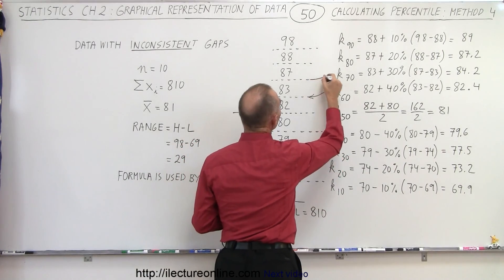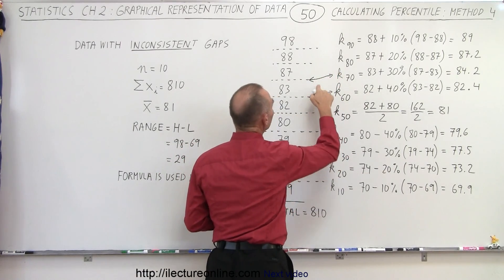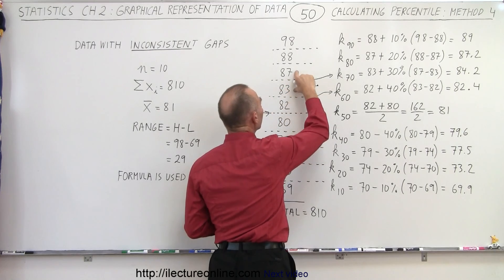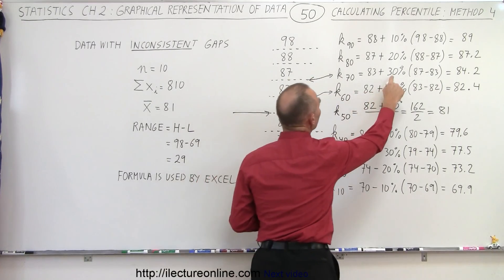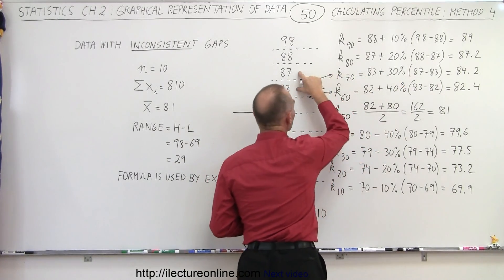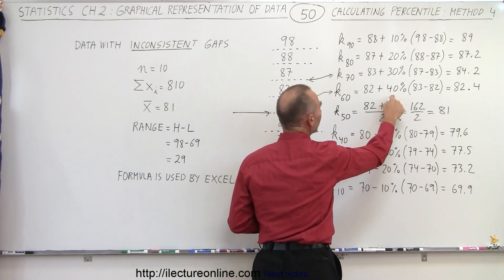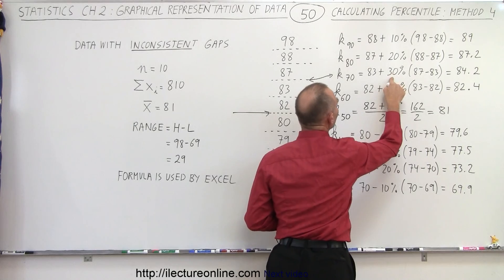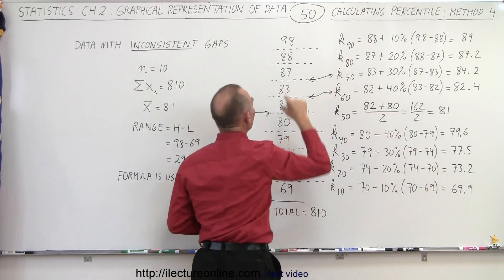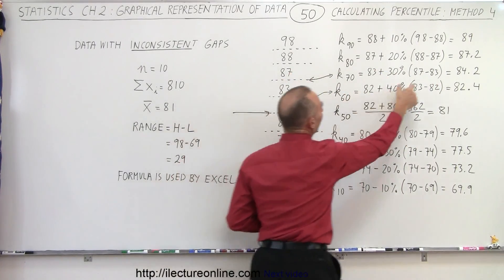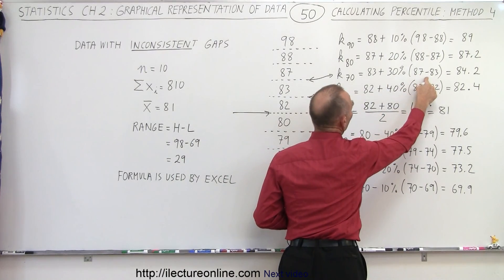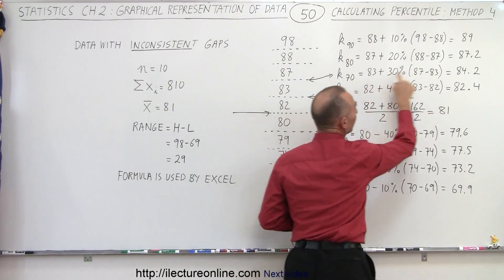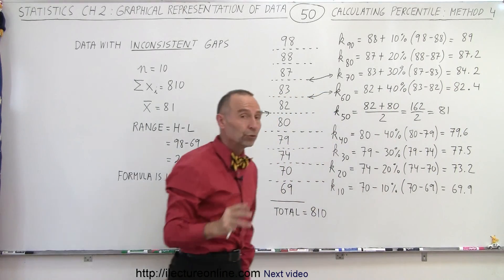Then if we want to get the 70th percentile, what we do there is we take the lower value of the boundary and then we take 30% of the difference. Notice we go from 50% to 40% to 30% to 20% to 10%. We add 30% of the difference between the two values. So the difference between the two values is 4. 30% of 4 is 1.2. Add 1.2 to 83, we get 84.2.